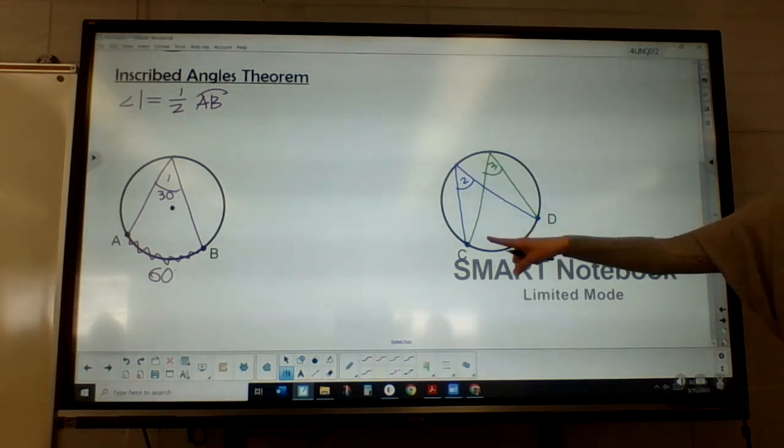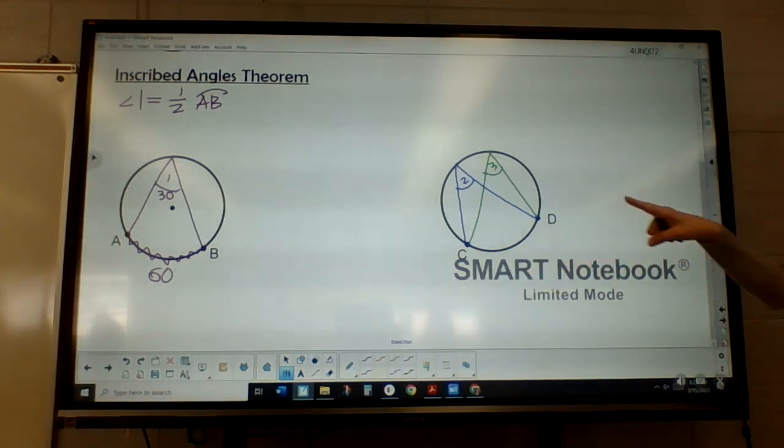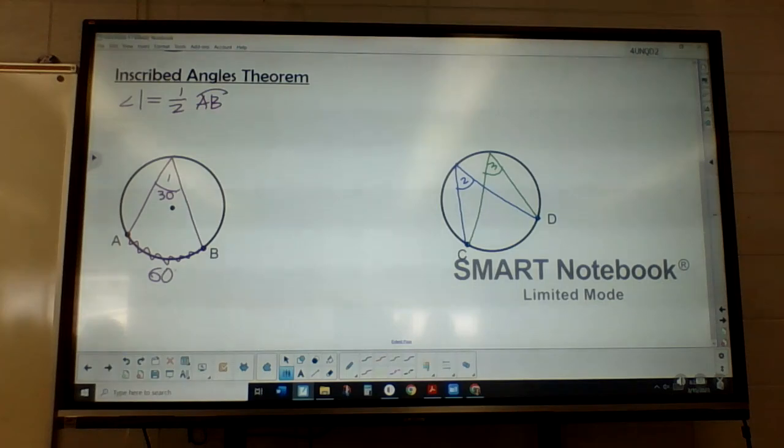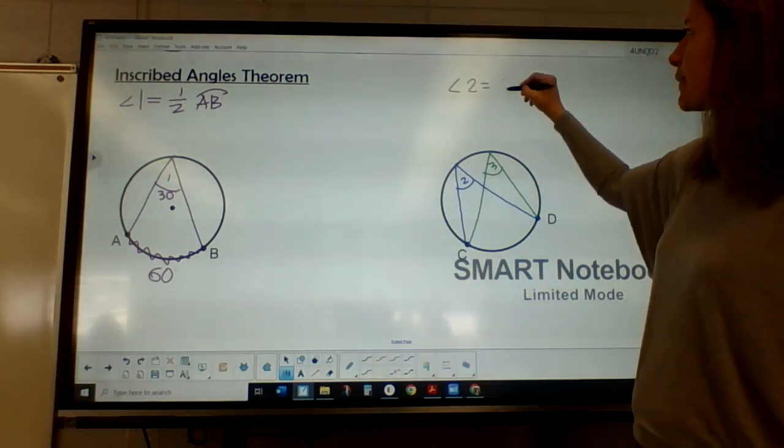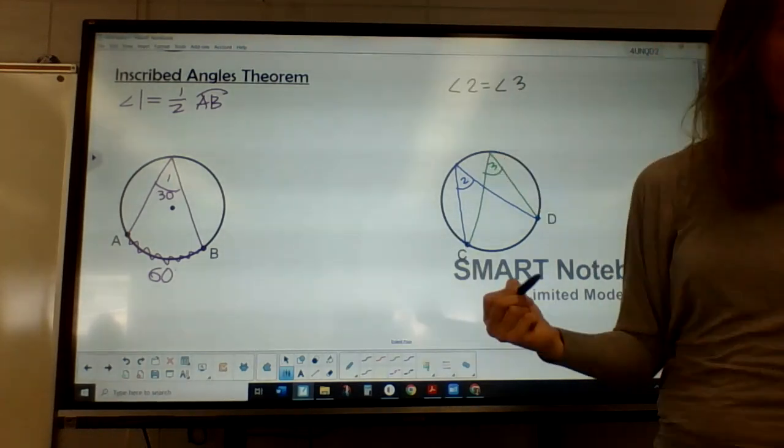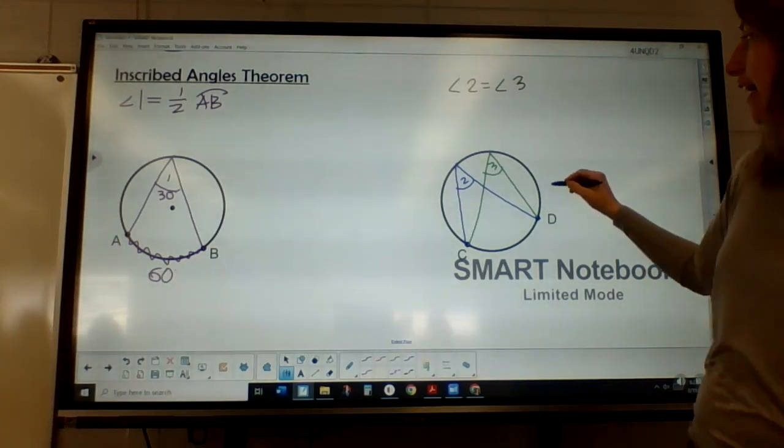Now, they both connect to this arc CD. So they both are going to be half of CD. So that means they have to be equal. So we're going to say angle two equals angle three. And both of them are half of that arc.